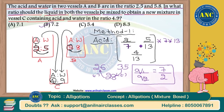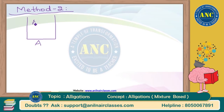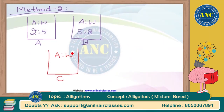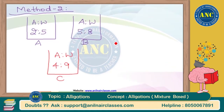If I take water as the base parameter — method 2 — will I still get the same ratio 7:2? Definitely yes. Let us check by working with method 2 using water as the base parameter. In vessel A, acid and water are in ratio 2:5, and in vessel B the ratio is 5:8.